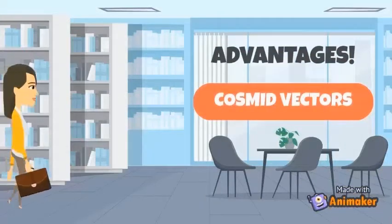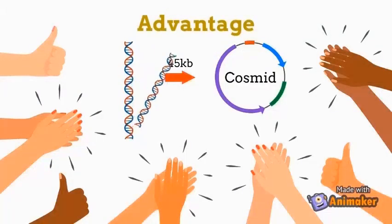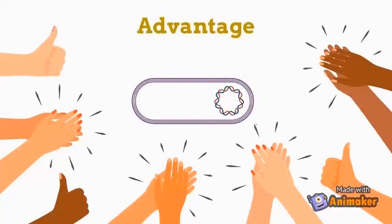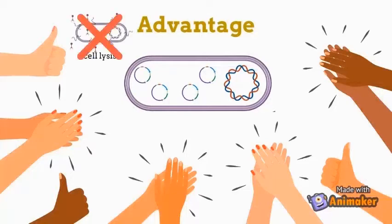Now I am going to tell you the benefits of using cosmid vectors. It can accommodate larger genes or DNA fragments of size up to 45 kbp. Also, the efficiency of introducing DNA into host cells has improved via bacteriophage transduction. Besides that, cosmid vectors are able to reproduce within the infected host without causing cell lysis, because they lack structural and regulatory genes of lambda DNA.